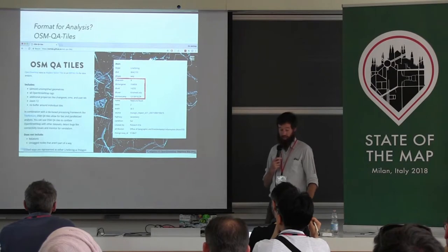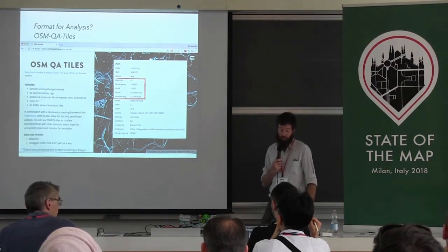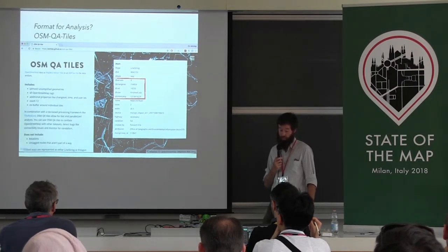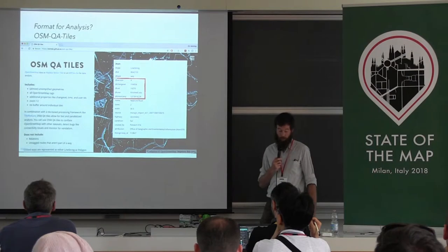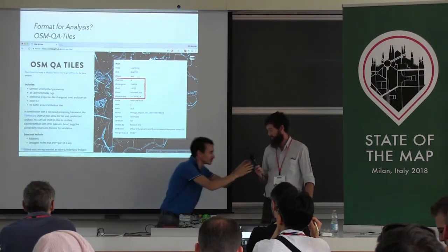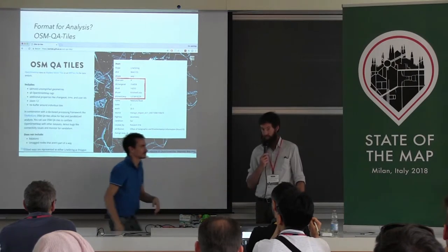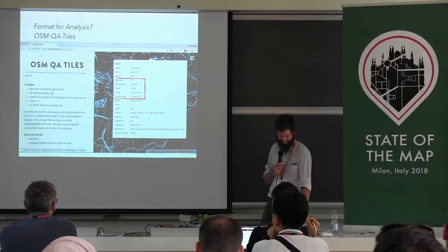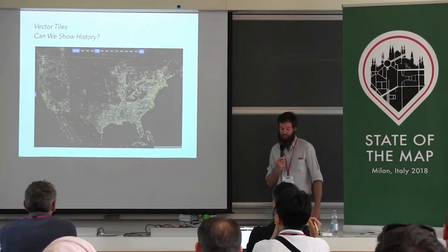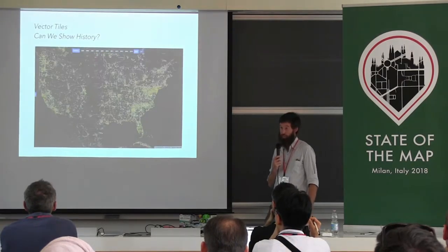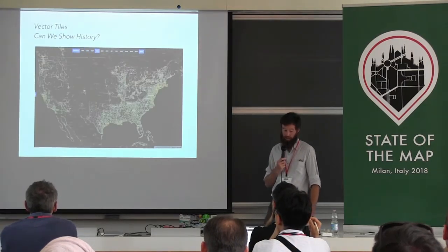Beyond questions and indicators, what's the best format from which we can measure these attributes? I'm personally a huge fan of OSM QA tiles — these are vector tiles with the majority of OSM object metadata included per object. However, these tiles don't show history very well. Tiles only contain the latest version of an object, so history is not currently tracked.